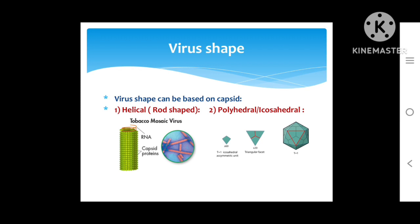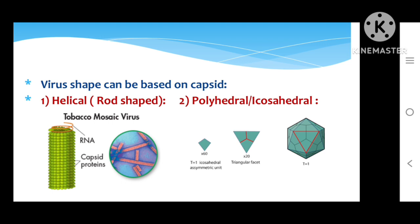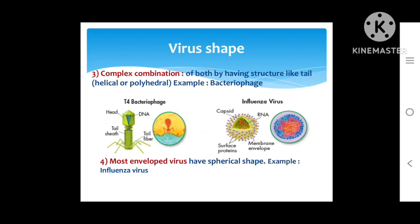Virus shapes include: helical or rod-shaped, such as tobacco mosaic virus; polyhedral or icosahedral symmetry — as shown, the shape is hexagonal but contains triangular facets with icosahedral asymmetric subunits, arranged in 20 faces, 12 vertices, and 30 edges; and complex symmetry, which is a combination of helical and polyhedral components, such as in bacteriophage. The fourth type is enveloped viruses with a spherical shape, for example influenza virus.